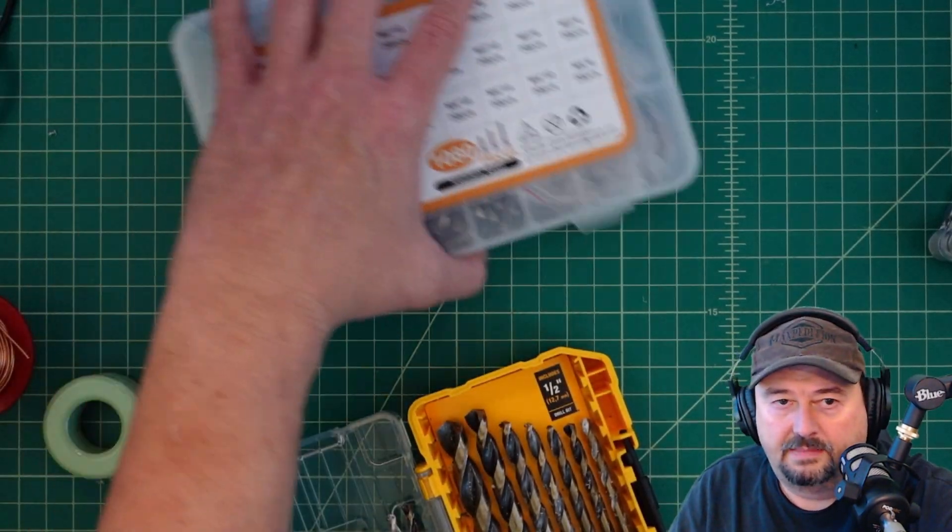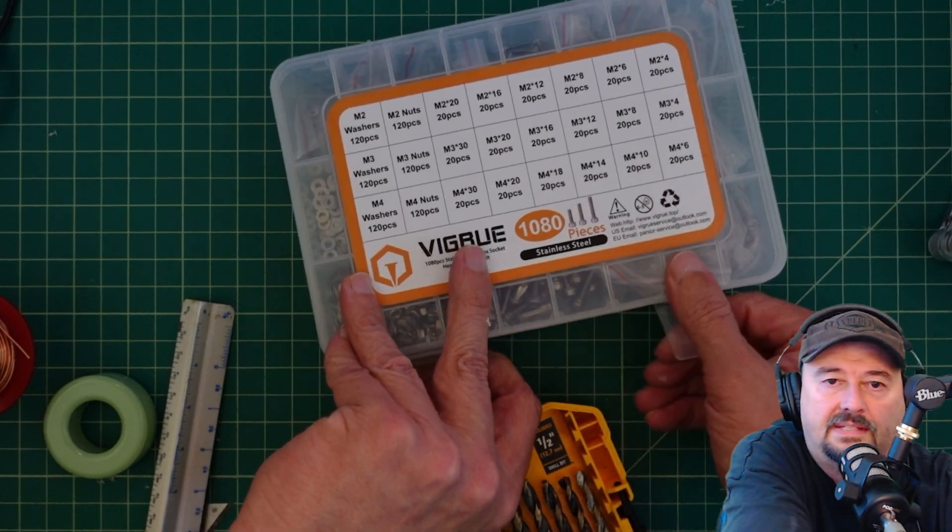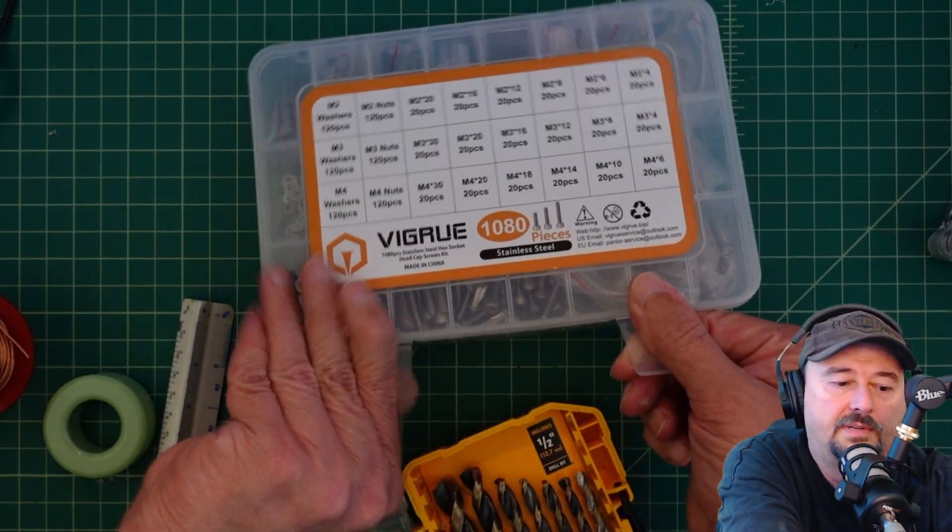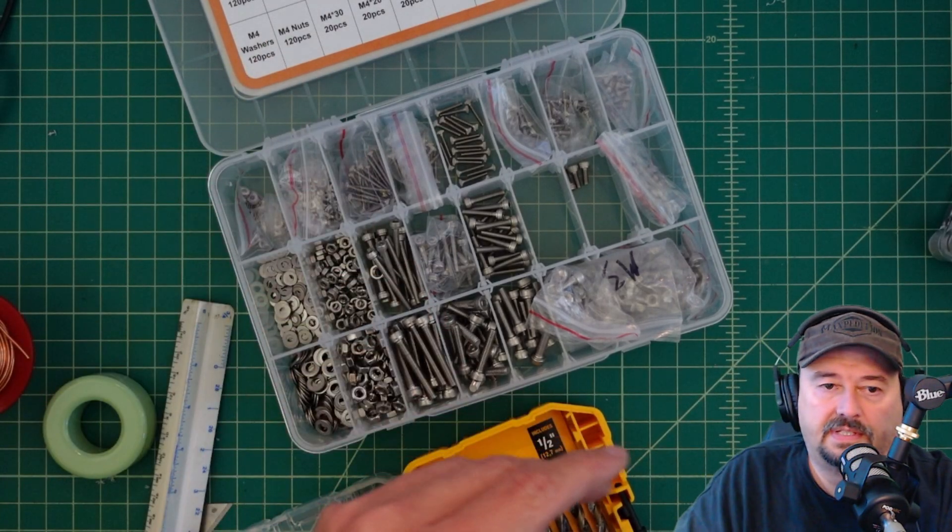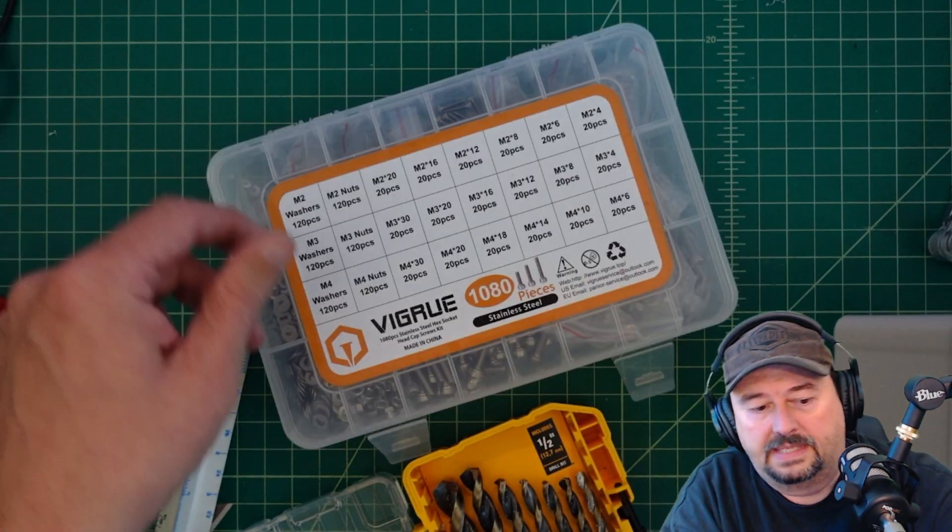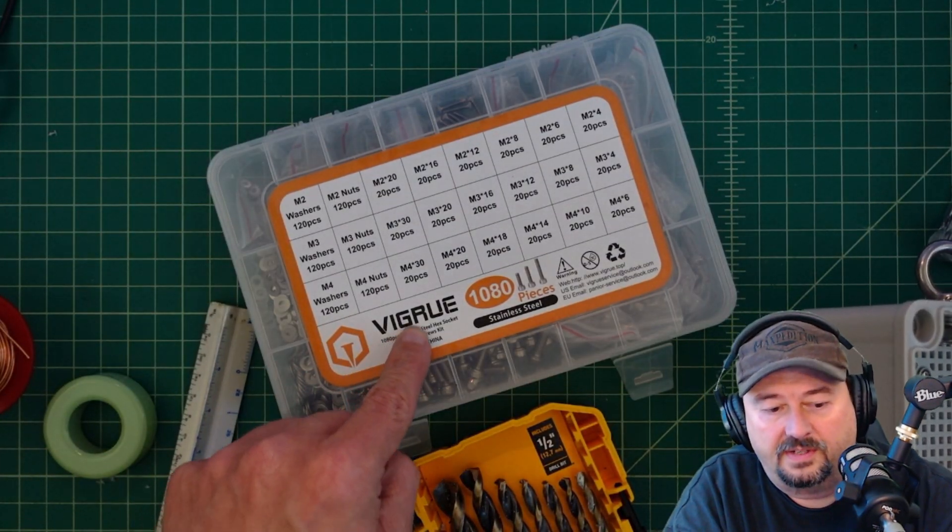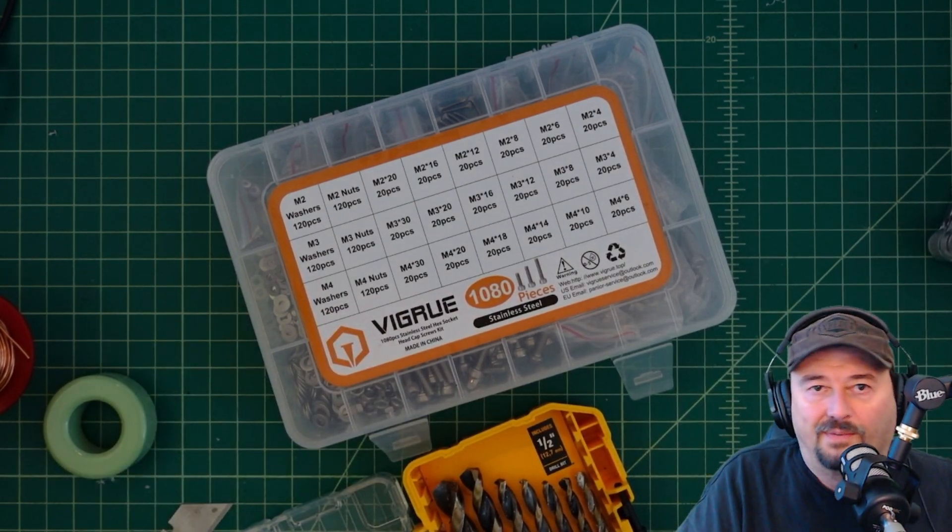The other thing I wanted to mention, and I'm not telling you to buy this, but what I am saying is that if you get into building these kind of things, this kind of thing is super-duper handy. It's just an assortment of smaller bolts and washers and nuts. That is what I use to put this on. This is called a VIGRUE, 1,080 pieces. I'm not advocating for it. It's just what I have and what I use.